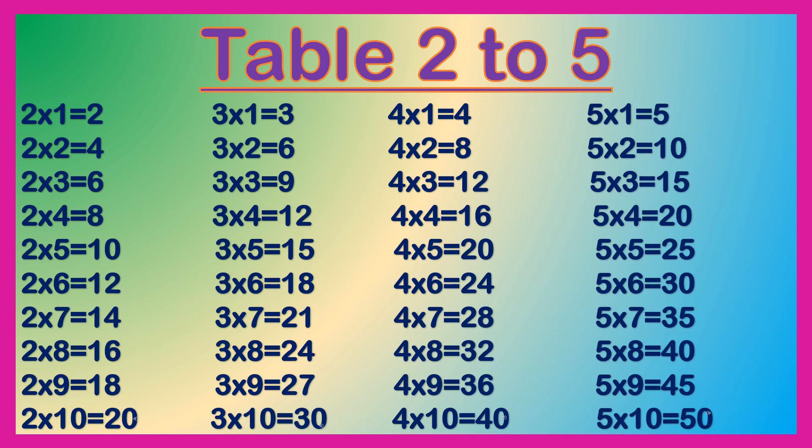2 1s are 2, 2 2s are 4, 2 3s are 6, 2 4s are 8, 2 5s are 10, 2 6s are 12, 2 7s are 14, 2 8s are 16, 2 9s are 18, 2 10s are 20.